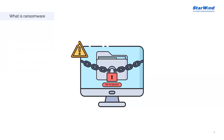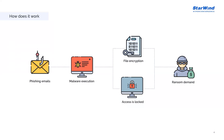The modern ransomware craze began with the WannaCry outbreak of 2017. This large-scale and highly publicized attack demonstrated that ransomware attacks were possible and potentially profitable, and basically since then dozens of ransomware variants have been developed and used in a variety of attacks. Ransomware as a malicious software threat operates through a series of stages to achieve its objectives successfully.